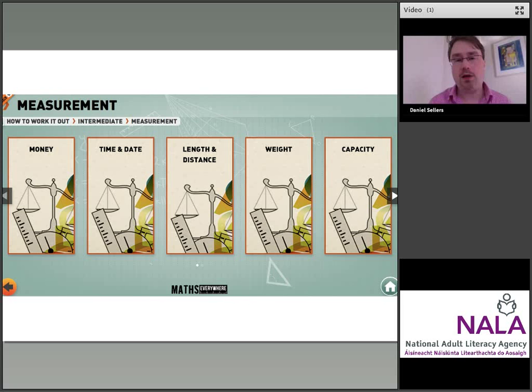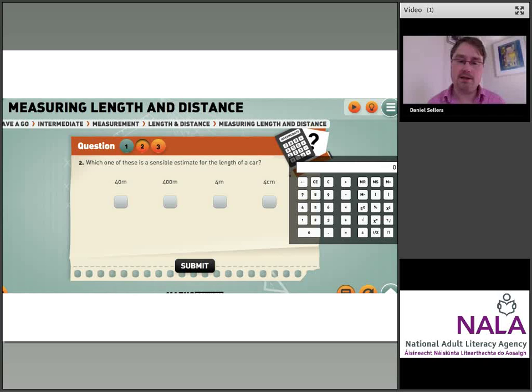You can see here, this is from measuring length and distance. Which of these is a sensible estimate for the length of a car? There's a calculator there if you need it. Mary said that these kind of activities were particularly useful for her learner, who was trying to get his head round the metric system and wasn't used to thinking in terms of meters. There's a video on this website which shows you that the average door in a home or an office is two meters high. So two meters being a door was something that the learner was able to get into his head.